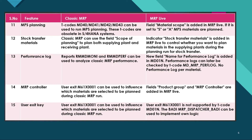For MPS planning: Tcodes MD40, MD41, and MD42 can be used for MPS planning, however these Tcodes are obsolete in S4 HANA. In MRP Live, the field 'material scope' is added, and if it is set to S or A, MPS materials are also planned.